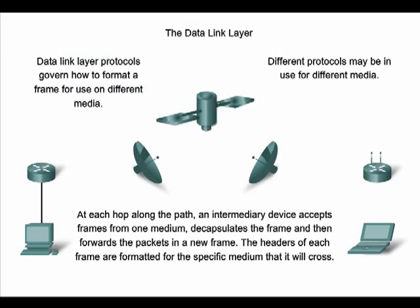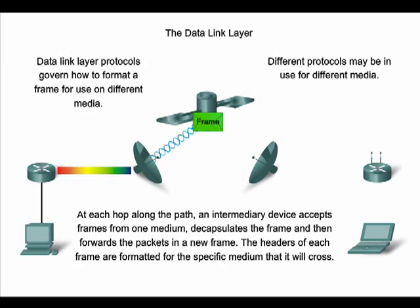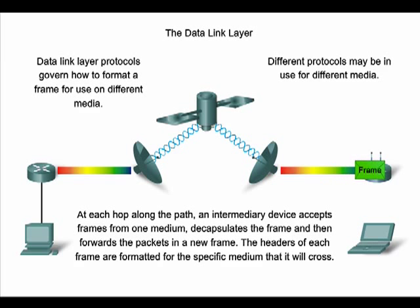For network layer packets to be transported from source host to destination host, they must traverse different physical networks. These networks can consist of different types of physical media, such as copper wires, microwaves, optical fibers, and satellite links. Network layer packets do not have a way to directly access these different media.